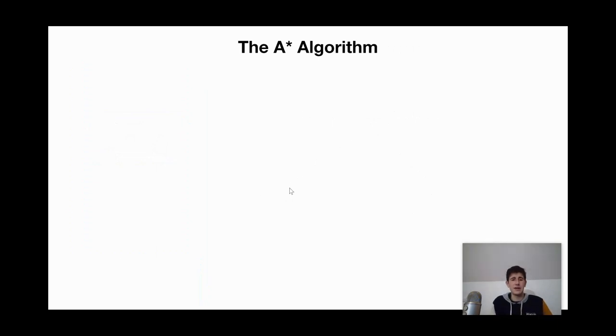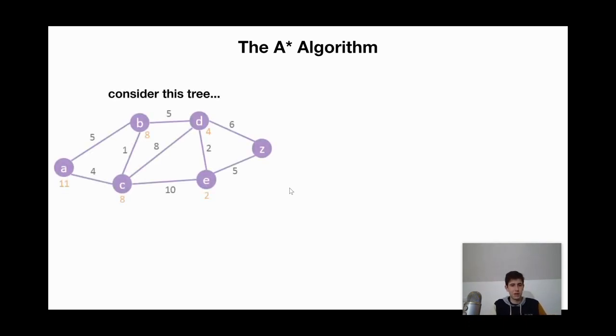So now let's actually talk about the A-star algorithm, its implementation, how it can be used. So let's consider this tree. We have these purple nodes, and don't get too flustered by this. We have these purple nodes denoted by letters A, B, C, D, E, and Z.